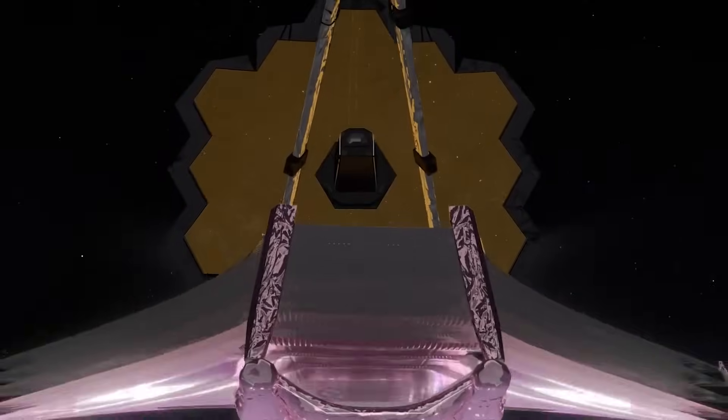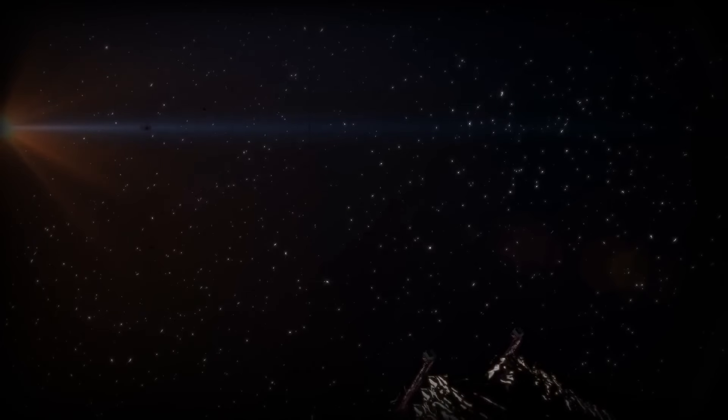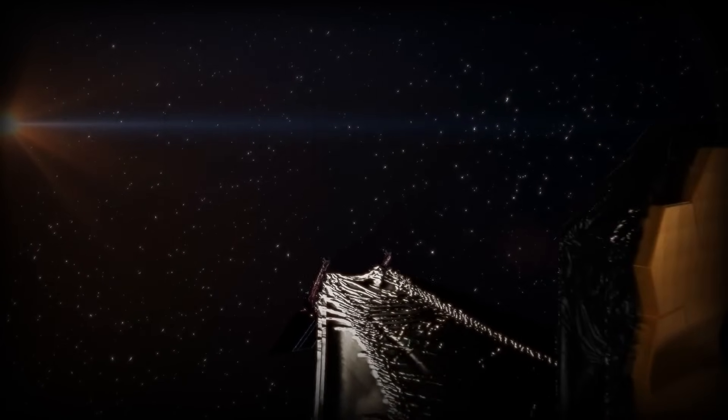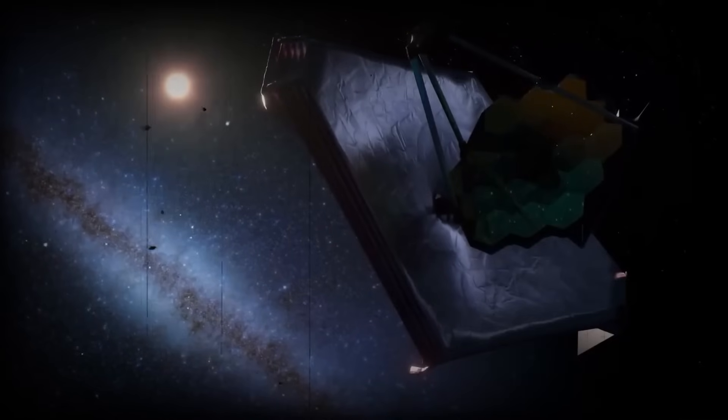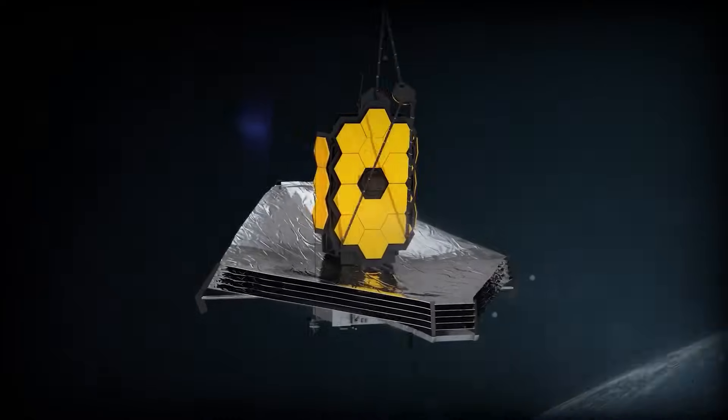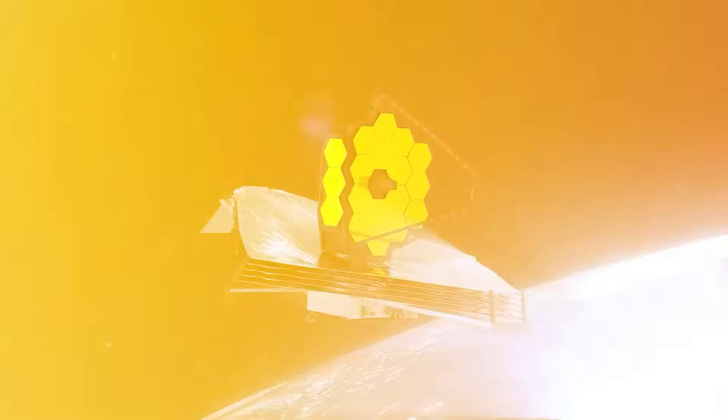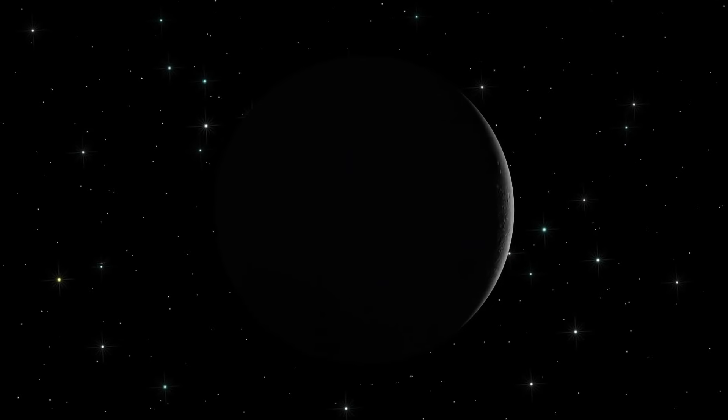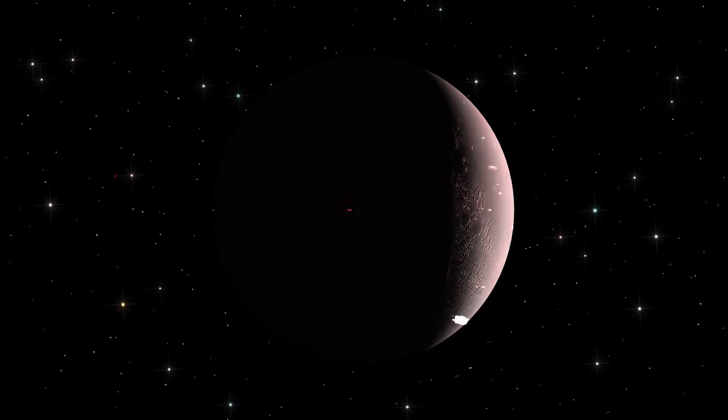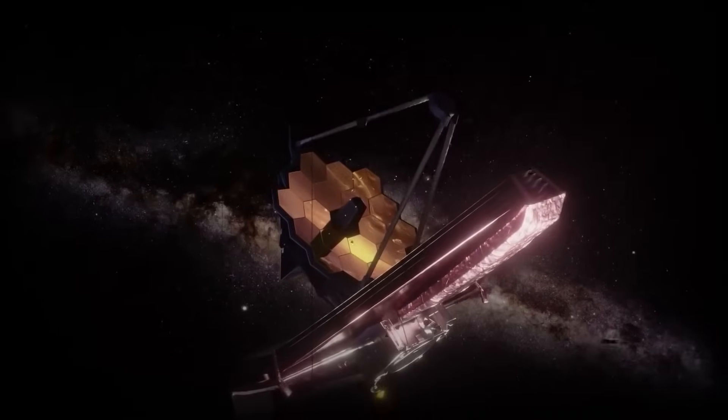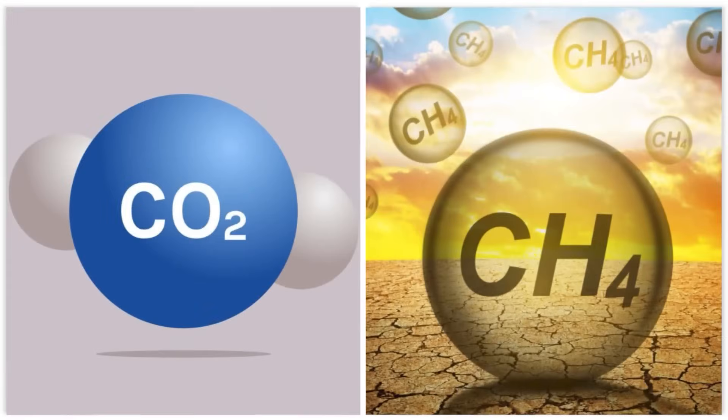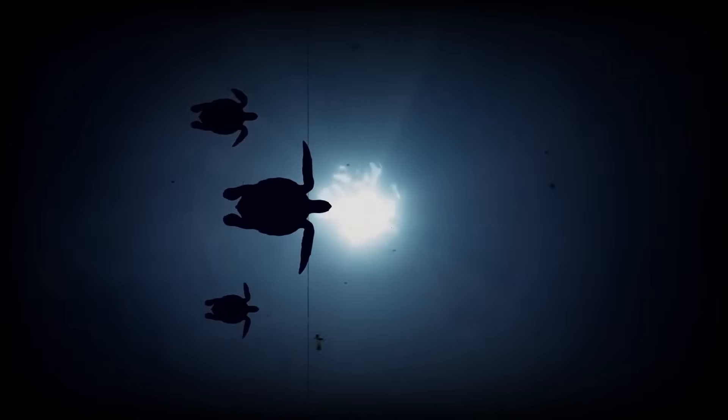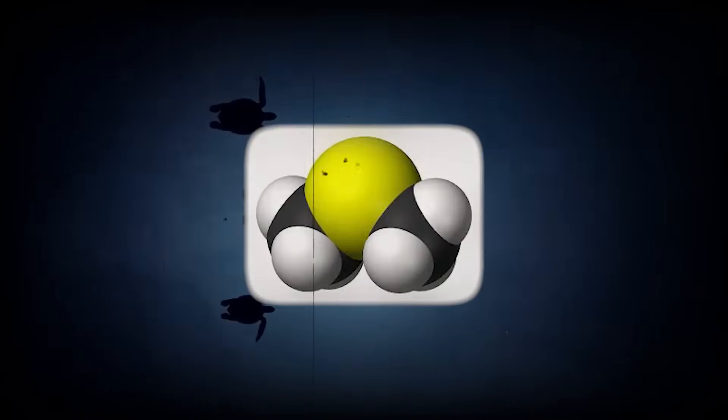Unlike any telescope before it, the James Webb Space Telescope sees the universe in infrared. This means it can peer through cosmic dust and darkness to detect the faintest signals from distant planets. But its real superpower is studying exoplanet atmospheres in shocking detail. When a planet passes in front of its star, some starlight filters through the planet's atmosphere. Webb captures that light and breaks it down to reveal the chemical fingerprints hiding within—gases like methane, carbon dioxide, even potential biosignatures like dimethyl sulfide.